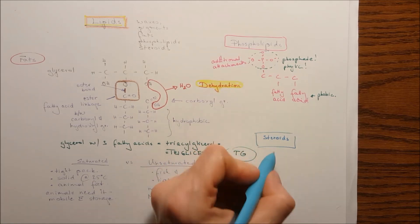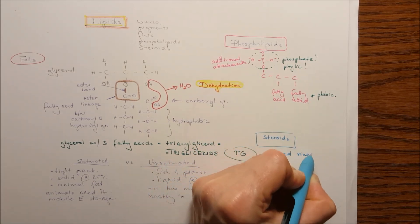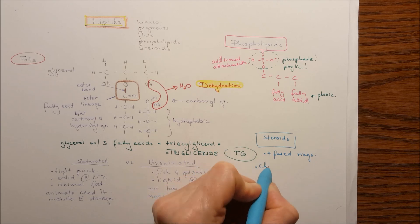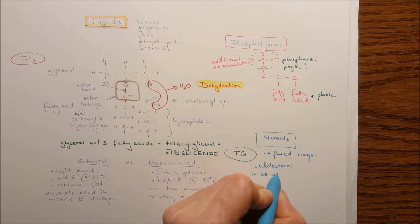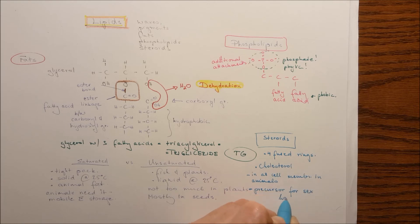The last one is the steroids that we have to cover in this video. They're fused, four fused rings together. The basic is the cholesterol and in animal cells, the cell membrane contains cholesterol. The cholesterol is also the precursor for sex hormones.